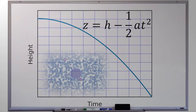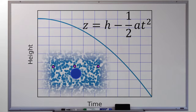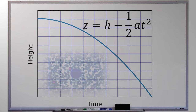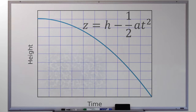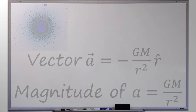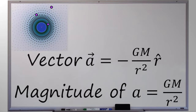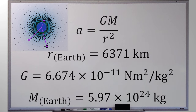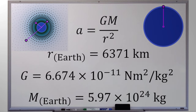But there is a deep connection here to the ideas that we explored in the previous video, and it's worth seeing. Remember from the previous video that we had an equation for the acceleration of the Earth's gravitational field. Today we're zoomed in near the surface of the Earth, and so our r value is basically just the radius of the Earth.